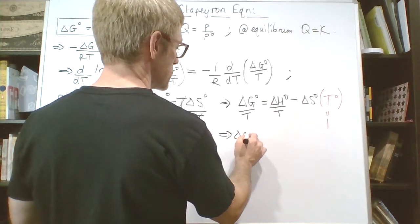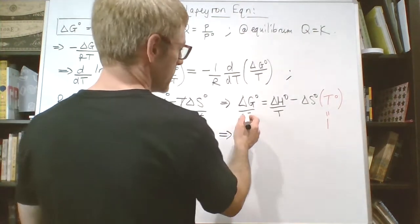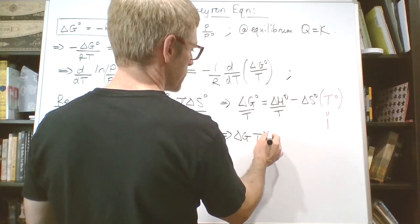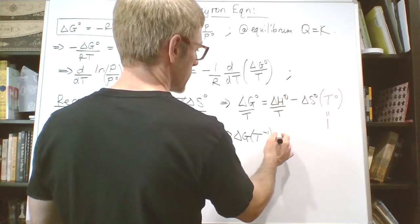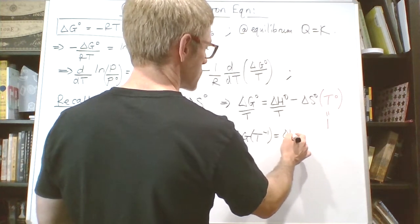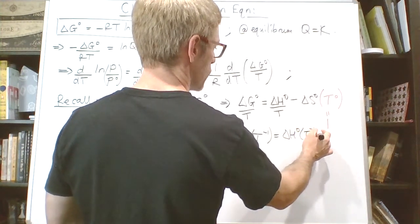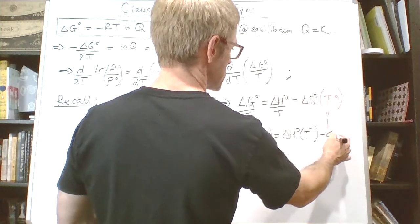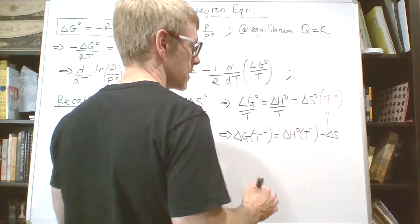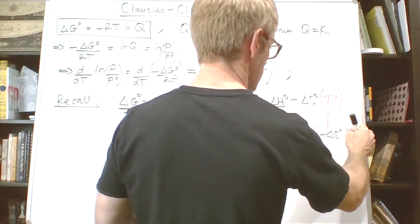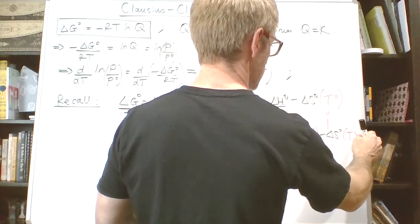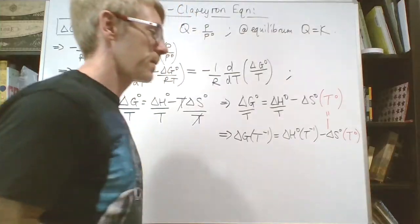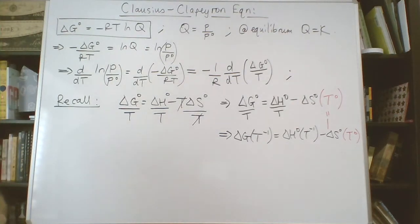I can write this more explicitly. So I can say ΔG°/T—one over T is just T^-1—equals ΔH° times T^-1 minus ΔS° times T^0. We have to be very careful because we're using zeros to mean standard and we're using zeros to mean zero, so we have to be pretty careful.